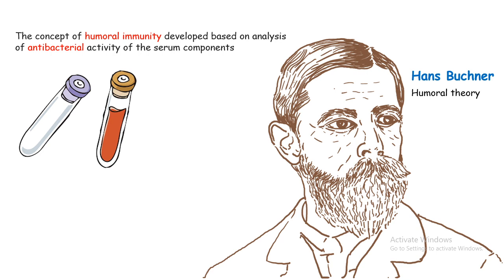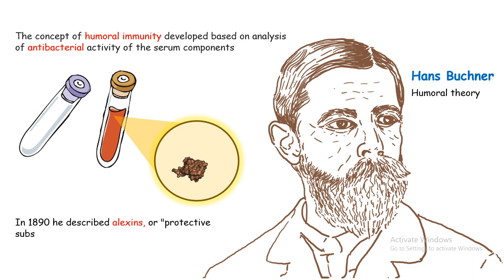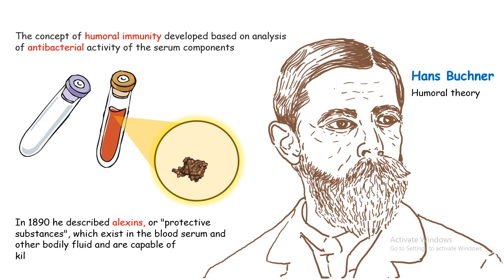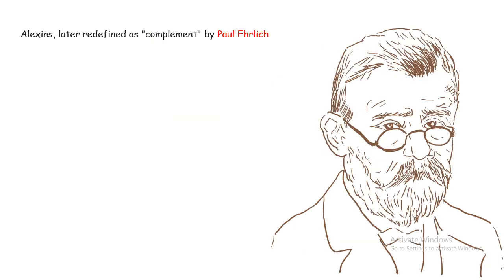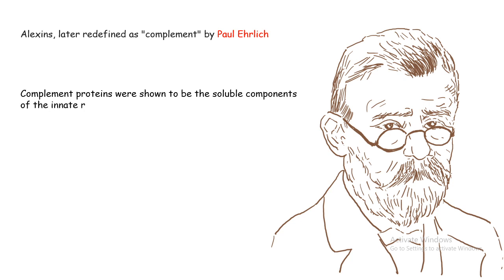Buchner found that components in the blood or serum, which he termed 'alexines,' have protective roles against pathogenic attack. He thought soluble substances present in serum or body fluids could provide immunity to an individual. Later, Paul Ehrlich termed them complement proteins, which are very important for immunity and are broadly part of the innate immune system. These concepts were the pillars for humoral immunity as we know it today.